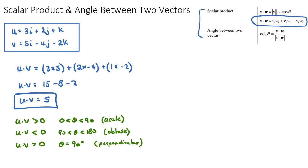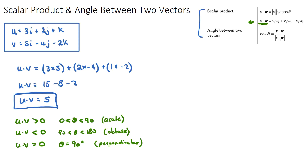We found the dot product using the first equation. The other two equations related to this topic are actually the same equation rearranged: v dot w equals the magnitude of v multiplied by the magnitude of w times cos theta. Dividing both sides by the magnitudes gives the same formula. We use the first formula to get a value for the dot product, and then substitute that answer — in our case positive five — into the second formula to solve for theta, the angle between the vectors.